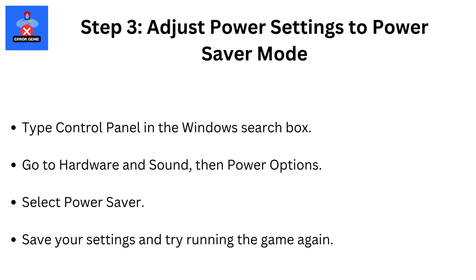Step 3: Adjust power settings to Power Saver mode. To optimize your PC's performance for gaming, switch your power plan to Power Saver. Type Control Panel in the Windows search box, go to Hardware and Sound, then Power Options, and select Power Saver. Save your settings and try running the game again. You can also try the Balanced or High Performance power plans if Power Saver doesn't work.